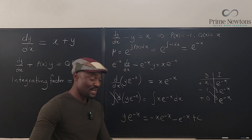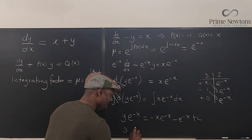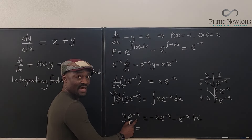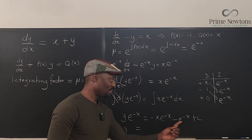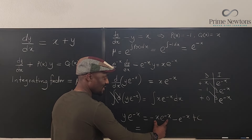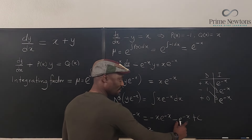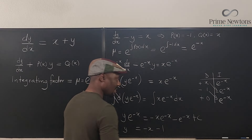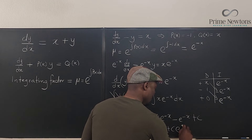Remember, the mission is to find y. We have y·e^(−x) equals −x·e^(−x) minus e^(−x) plus C. To isolate y, divide everything by e^(−x), which is the same as multiplying every term by e^x. Multiplying −x·e^(−x) by e^x gives −x; multiplying −e^(−x) by e^x gives −1; and multiplying C by e^x gives C·e^x. So the final answer is y equals −x minus 1 plus C·e^x.